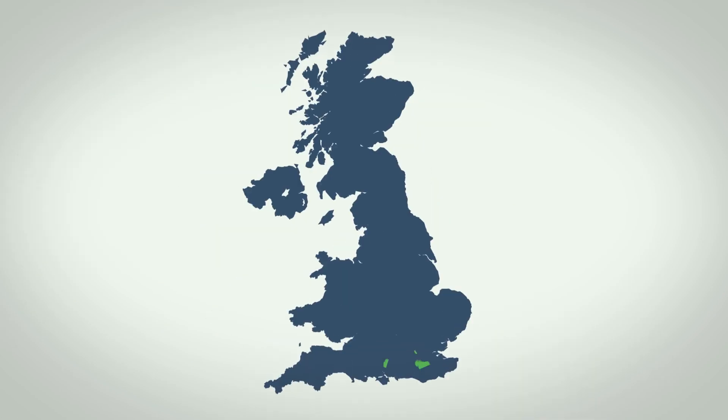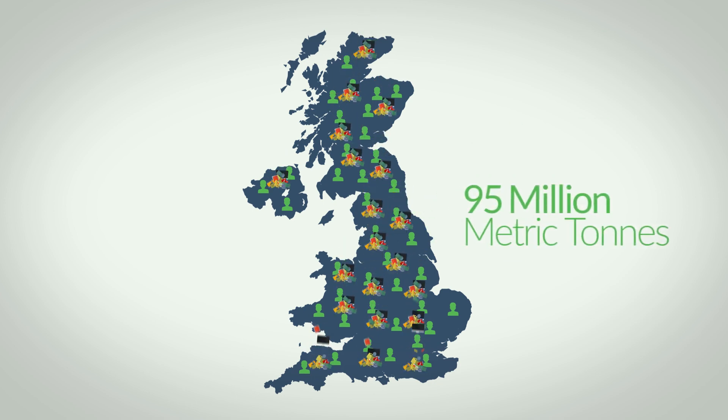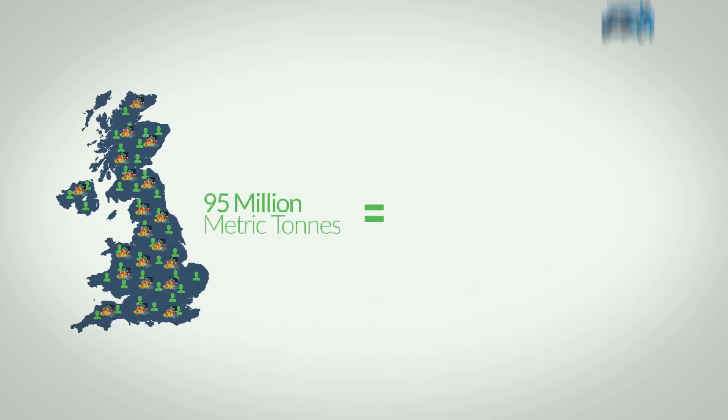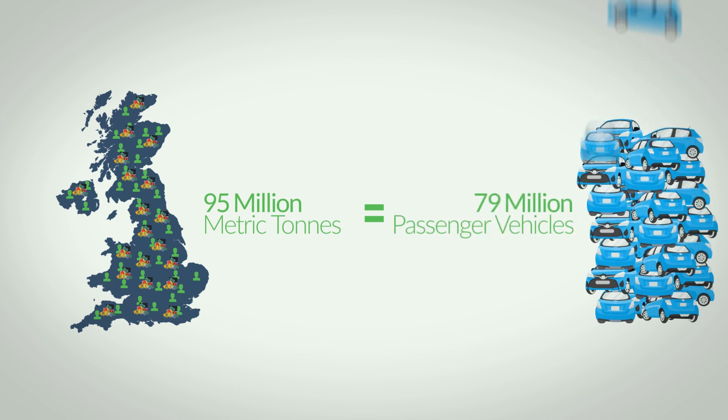For example, the small island nation of the United Kingdom has roughly 65 million people, produces 95 million metric tons of waste per year. That's the weight of 79 million passenger vehicles.